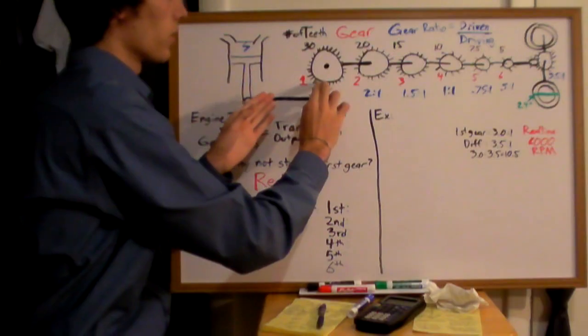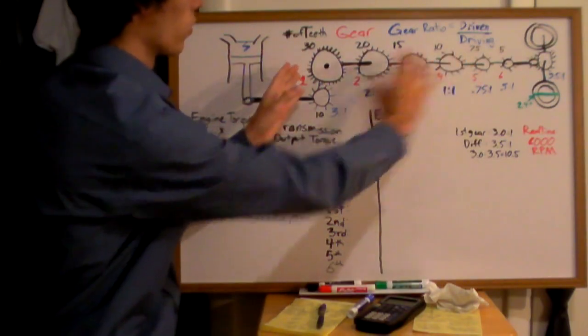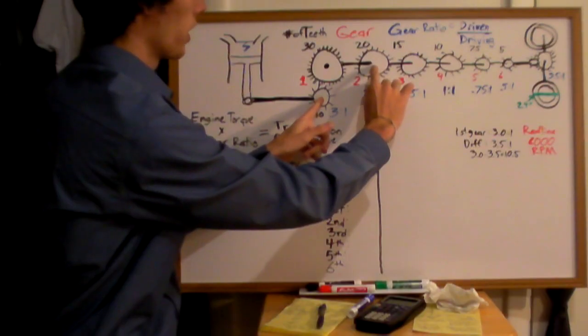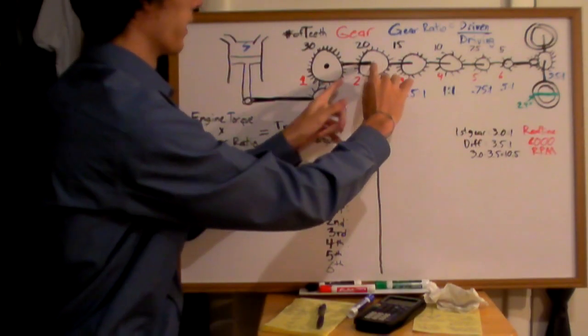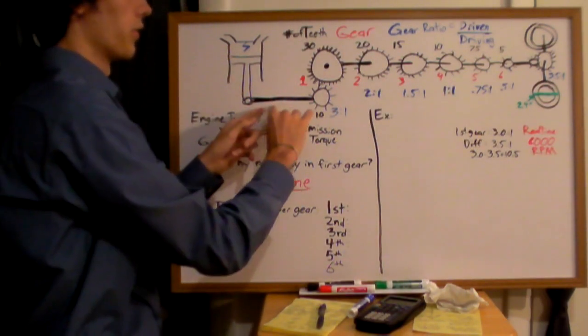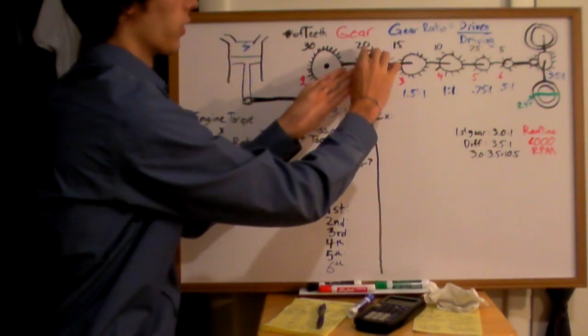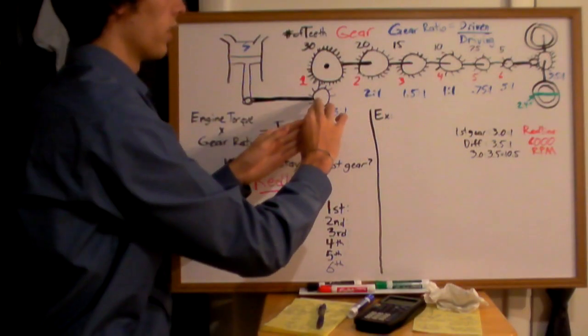Now, as you change gears, alright, let's say we shift and our engine is now in second gear, and these two gears are connected. Well then, every two revolutions of this gear, you're going to have one revolution of the transmission, because there's 20 teeth on this, 10 teeth in here.